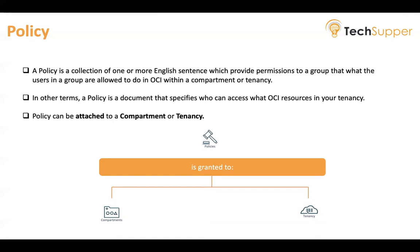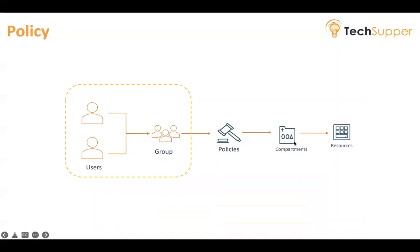Whatever you define at the tenancy level will be applied to all compartments. Here, we have users which are assigned to a group, and we want a group to manage a particular compartment. All the resources in a compartment will be managed by a group, and all the users in the group can manage that particular compartment. We write a policy on a group and define in which compartment the group is allowed to manage all the resources.